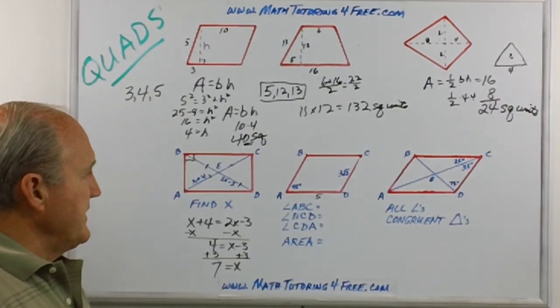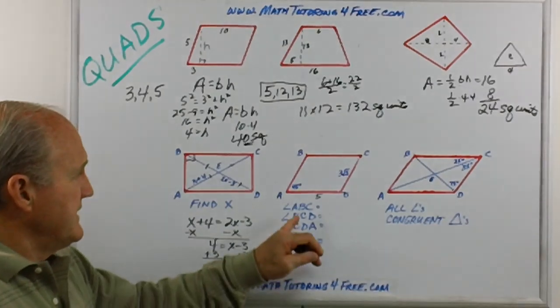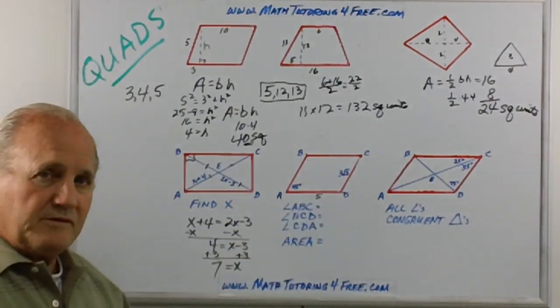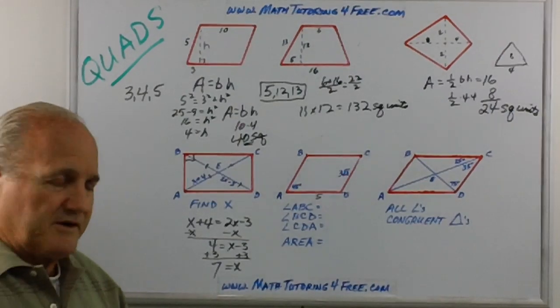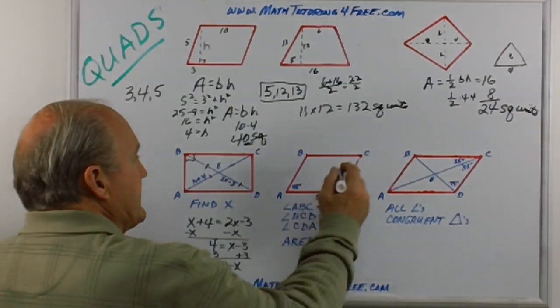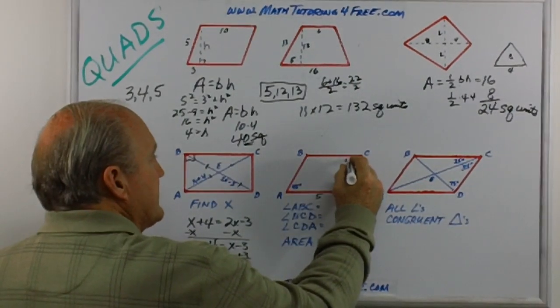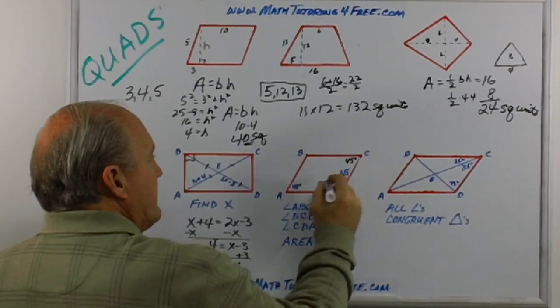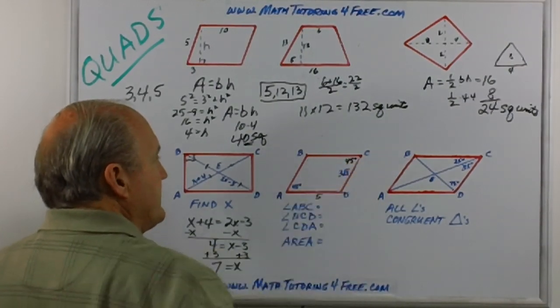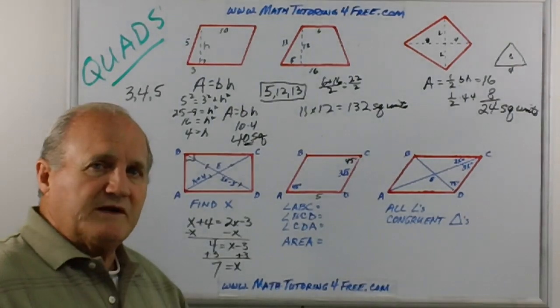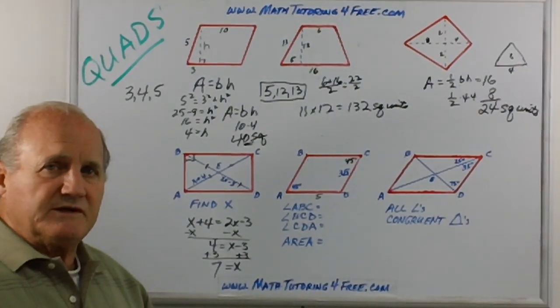Another parallelogram, and it's asking us to fill in the other angles. And what do we know about the angles of a parallelogram? The opposite angles are equal to each other. So if this is 45, then the opposite corner is 45. What about the consecutive angles? What's their relationship?